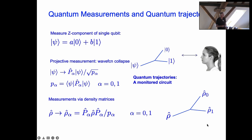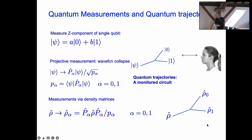Let me talk a little bit about quantum measurements and quantum trajectories. Imagine we just have a single qubit, A|0⟩ + B|1⟩, and measure the z-component. When one makes a projective measurement, the wave function collapses with certain Born probabilities: you end up in state |0⟩ with probability |A|², or state |1⟩ with probability |B|². For a given measurement outcome, one is following a specific trajectory. If one starts making subsequent measurements, the quantum trajectories fill out a tree where different measurement outcomes lead to forks in the tree.